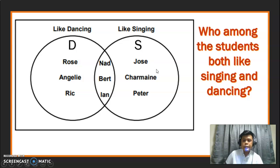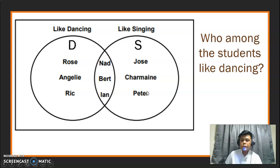Next, who among the students both like singing and dancing? Sino daw yung parehas gusto yung dancing and singing? Sila ay si Nad, Bert, at si Ian. And then, the last question, who among the students like dancing? Kung papansin natin, wala dito yung word na only. Sino daw ang mga students na ang gusto ay dancing? You have six elements. Yung buong set na to. Si Rose, Angelie, Rick, Nad, Bert, at saka si Ian. Iyan ay isa sa mga examples ng problems na pwede natin masagot gamit yung sets.